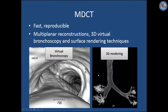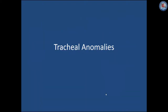On the left is a virtual bronchoscopic image of the carina from the bronchoscopist's perspective, showing the right main bronchus and left main bronchus. Notice the invagination of the membranous wall on this expiratory image. On the right is a 3D rendering of the trachea and bronchi.